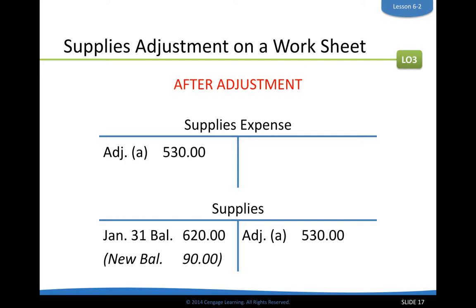The adjustment is: we credit supplies for $530 — this decreases supplies — and debit supplies expense for $530 — this increases the expense. Our new balance is the difference: $620 minus $530 gives supplies a debit balance of $90. That means we still have $90 worth of supplies left in that account.